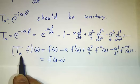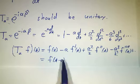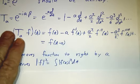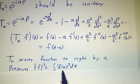So this operator takes a function and it moves it to the right by a units. If you move something to the right by a units, you don't change the integral of its square. So this operator preserves length, and that means that it's unitary.